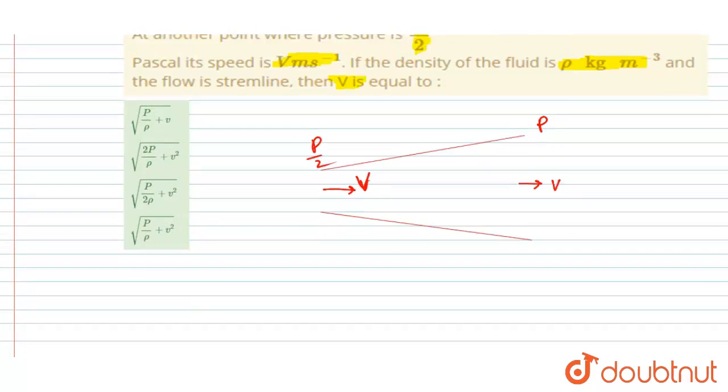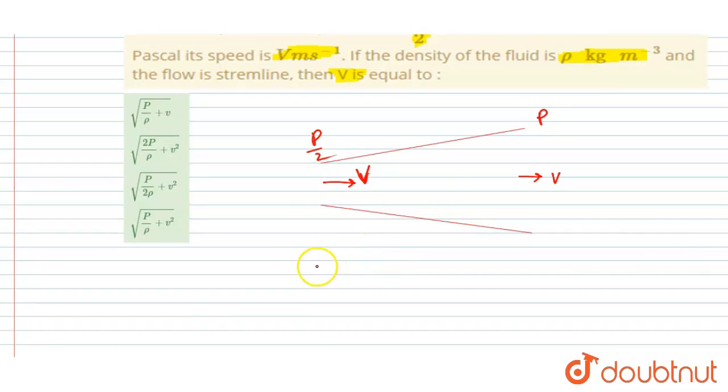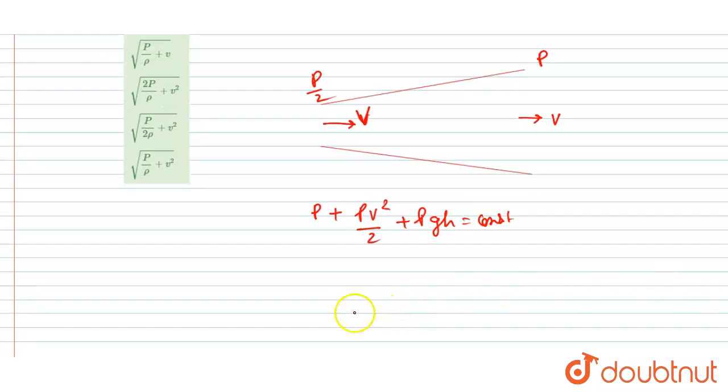It is said that this is a horizontal pipe, so if I apply Bernoulli's theorem, we know that p plus half rho v square plus rho gh is constant for a continuous streamlined flow. Here, this is a horizontal pipe, so rho gh for the two will be same.